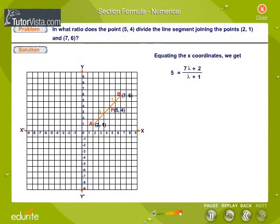Equating the x coordinates, we get 5 is equal to 7 lambda plus 2 divided by lambda plus 1. Solve for lambda by entering the correct values.